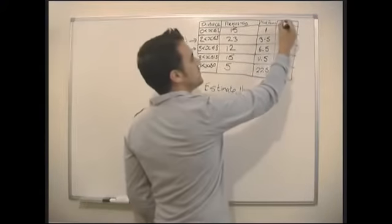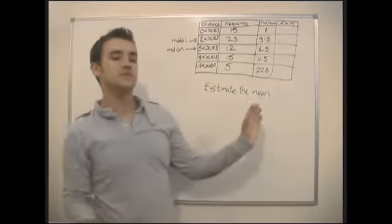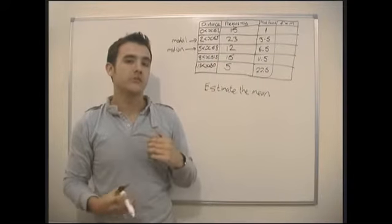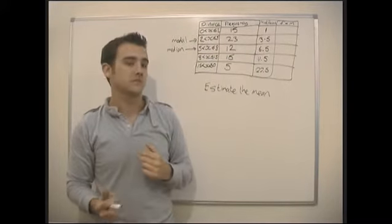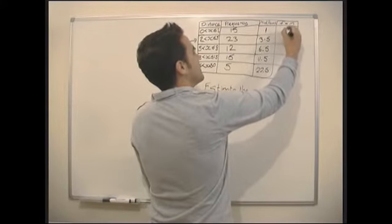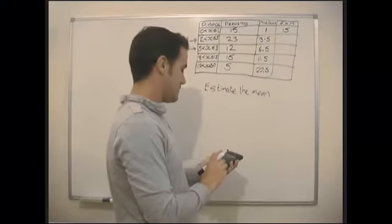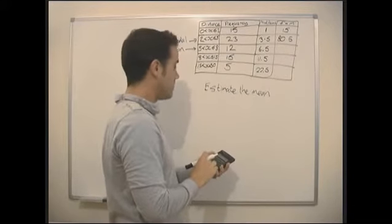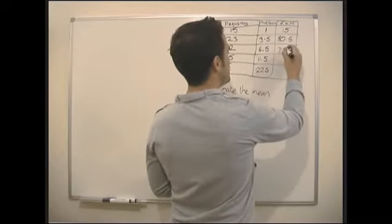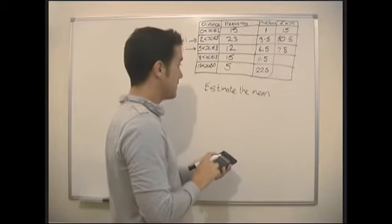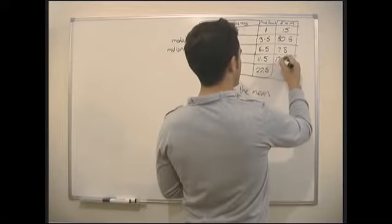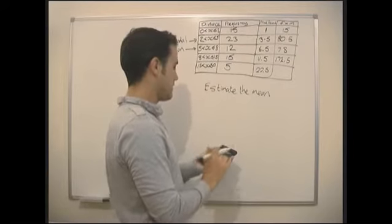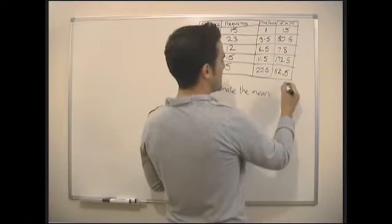So now what we need to do, we do frequency times the midpoint. Same as we did for our normal frequency tables. We just do however many there were times by the distance times by however many results there were for that distance. So we get, here we get 15, using the calculator for the rest. 23 times 3.5 is 80.5, 12 times 6.5 is 78, 11.5 times 15 is 172.5, and 22.5 times 5 gives us 112.5.